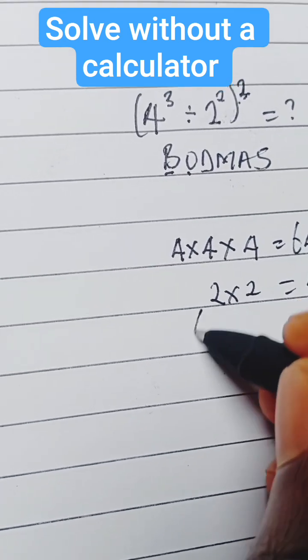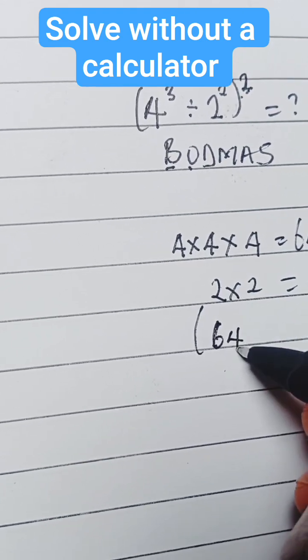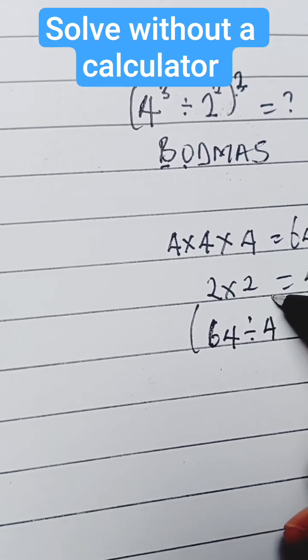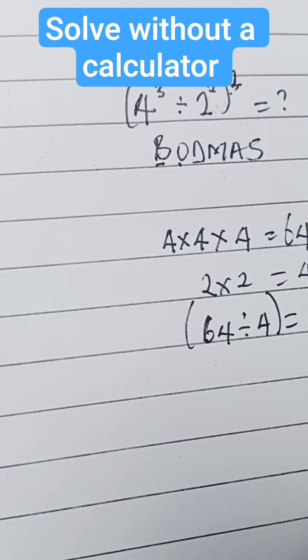So now in the bracket we have 64 divided by 4, and that is equal to 16.